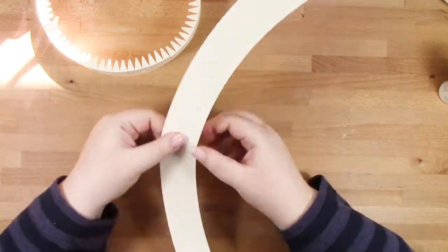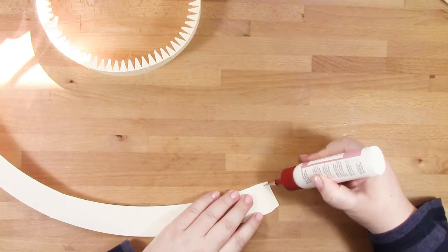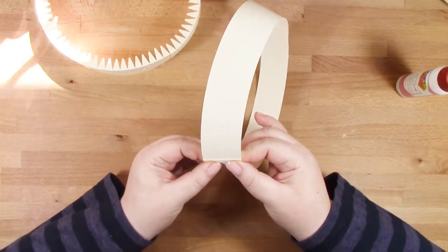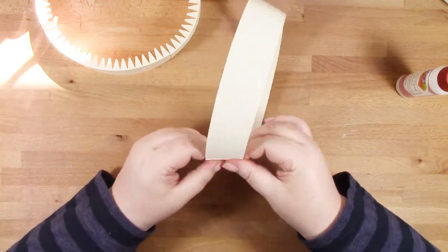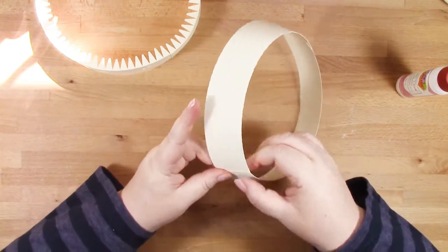I'm going to join these together with the tabs. Although the tabs have score lines beside them, you don't want to score along those lines. Those are just placement lines for where the piece overlaps, so you butt up to that line but don't fold along it.